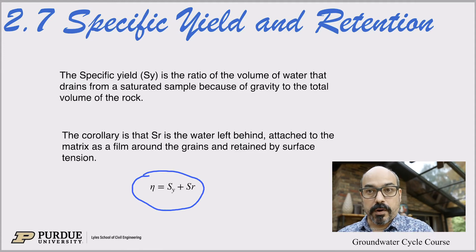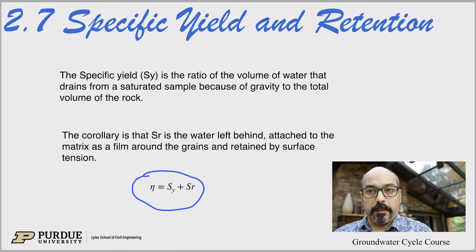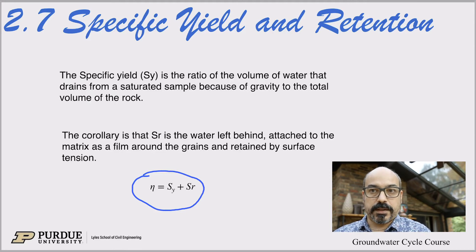The porosity itself is just the sum of the two. For example, if you have 20% porosity, maybe the specific yield is 15–17% and the specific retention is 5%.